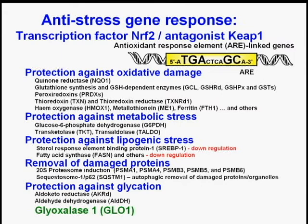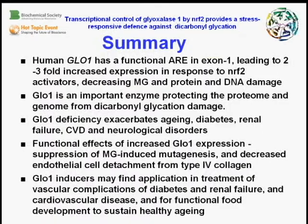Supporting this are roles of aldoketoreductases and aldehyde dehydrogenases that can also metabolize dicarbonyls. In summary, human glyoxalase 1 has a functional ARE in exon 1 of the gene, leading to two- to three-fold increased expression in response to NRF2 activators. This leads to decreased methylglyoxal concentrations and decreased methylglyoxal protein and DNA damage.